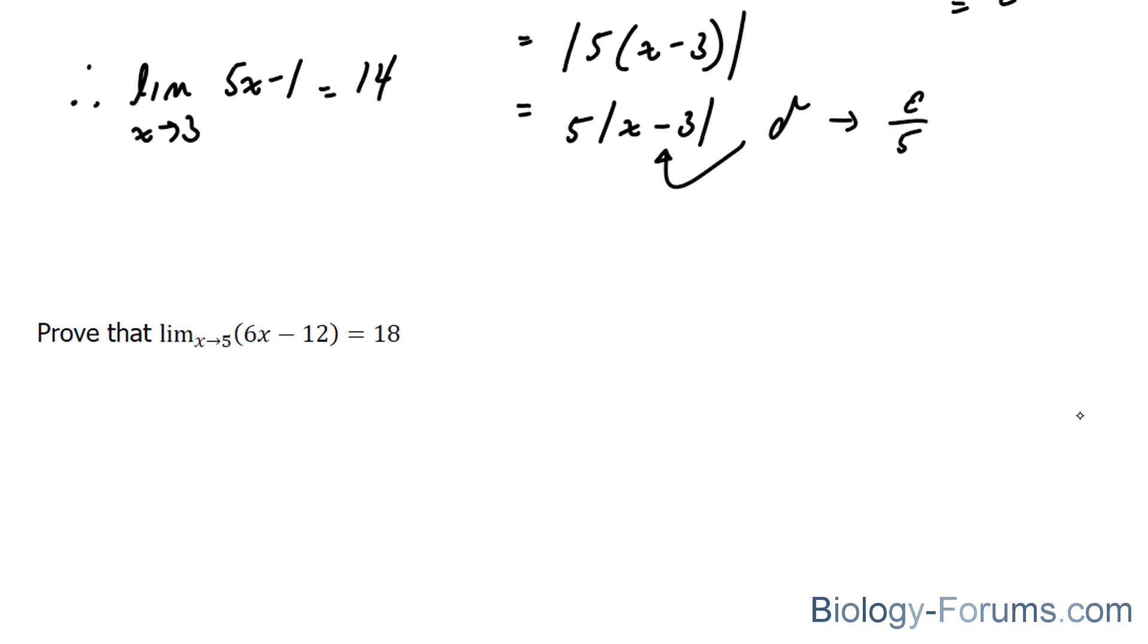Moving on to question 2. In this question, they're asking us to prove that the limit as x approaches 5 for the function 6x minus 12 is equal to 18. I'll label this as my function f of x, this will be my L, and this will be my a.